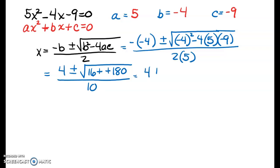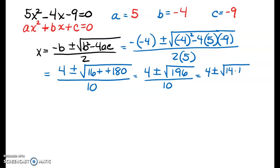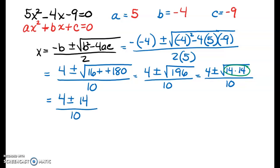Let's simplify. 4 plus or minus — what's 16 plus 180? That's 196 — all over 10. I know from earlier in the school year that 196 is a perfect square; it is 14 times 14. I don't need to go any further because I have a group of two numbers that are exactly the same. So when I reduce that, I get 4 plus or minus 14 over 10.